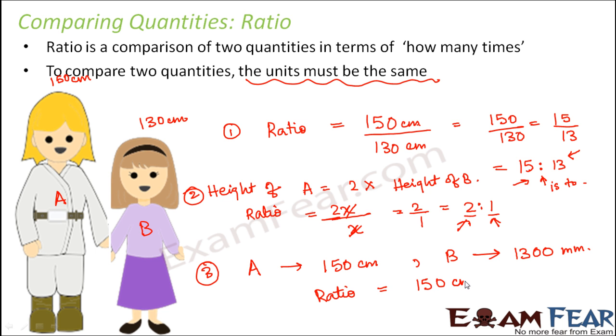Now you have to find out the ratio of height of A to the height of B. So height of A is 150 centimeter divided by, you just can't say 1300 millimeter. And you just can't find their value and say that this is the ratio. So you just can't do that.